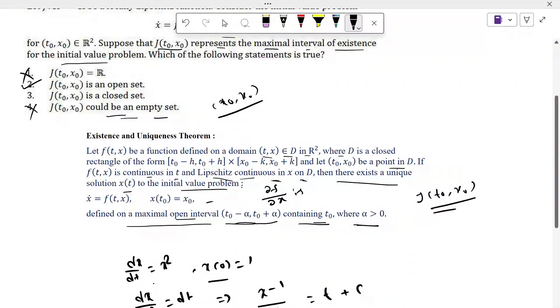In option 3 what is said: J(t0, x0) is closed. So option 3 is false. Basically by the Existence and Uniqueness Theorem, we get the maximal open interval. If option 2 is true, option 3 should be false. By example we see that option 3 is false. So finally, option 2 is true and other options are false.